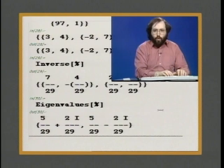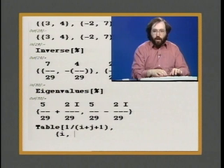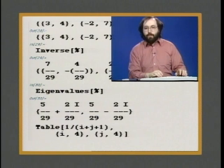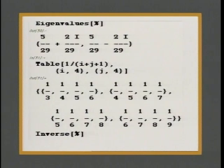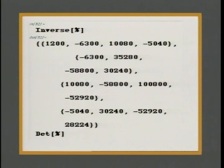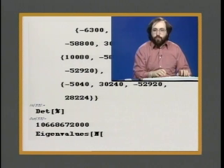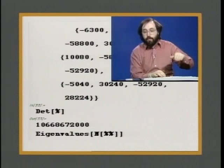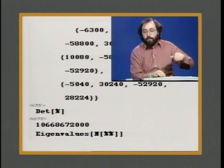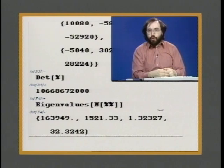We could build some slightly bigger matrices. We can use the table command in Mathematica to construct a matrix with a particular form. For example, here I'll construct the so-called Hilbert matrix, by making a table of the expression 1 over i plus j plus 1, with i running up to 4 and j running up to 4. Now we can do all kinds of computations with this matrix — take the inverse, take the determinant of that inverse, find the eigenvalues. Let's find the eigenvalues of a numerical approximation to the inverse of the Hilbert matrix, and we'll get numerical approximations to each of them.